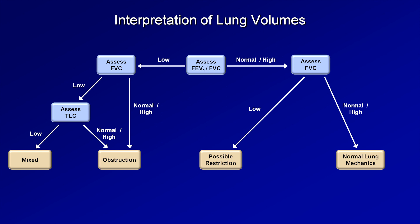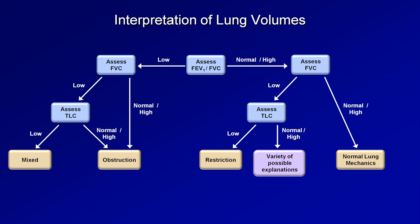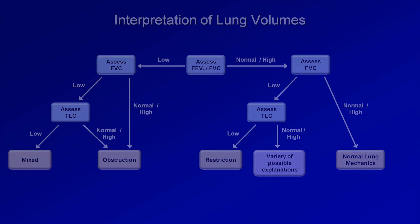The other major point of uncertainty was with a normal or high FEV1 to FVC ratio combined with a low FVC being indicative of possible restriction. Once again, let's first check the lung volumes before drawing any conclusions. If TLC is low, restriction is confirmed, while if TLC is normal or high — which is the rarest constellation of PFT findings — there are various possible explanations. That ends this video on lung volumes. The next video in this series will discuss the DLCO.